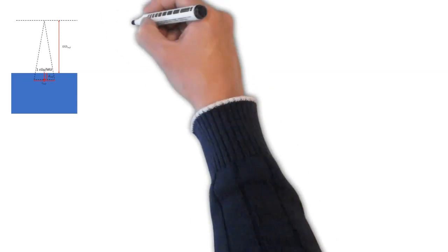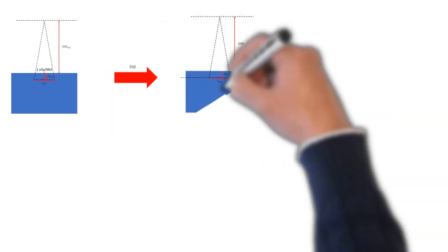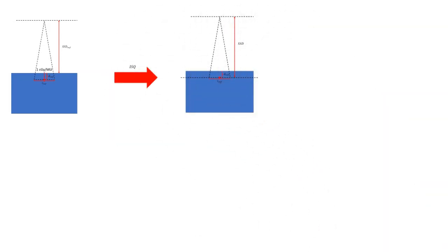Now with an isocentric calculation, we're actually going to move the calculation point up to the isocenter. So instead of being at the reference SSD, we are just shifting that point to the isocenter so that it is at the source to axis distance. And that is typically done using an inverse square correction.